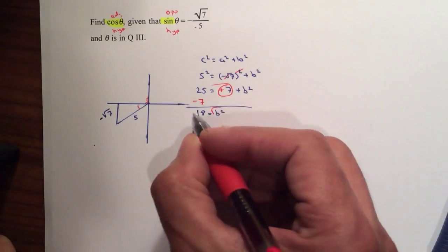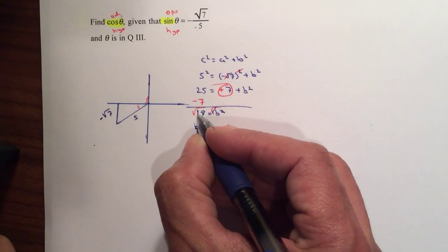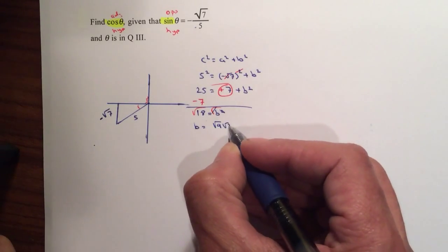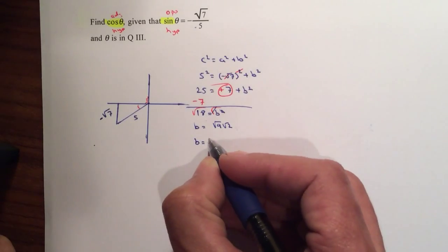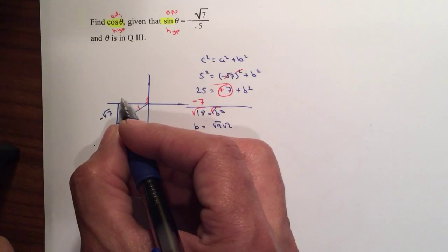Take the square root on both sides. The square root cancels, so therefore B is equal to the square root of 18. But the square root of 18 can be written down as the square root of 9 times the square root of 2. So therefore that will be 3 square root of 2. And that is side B.